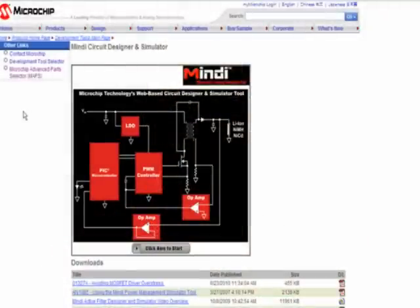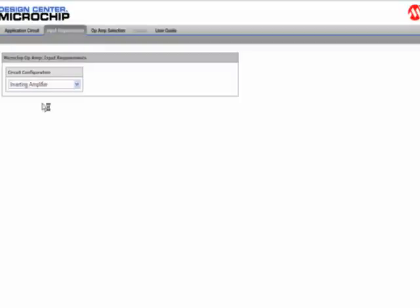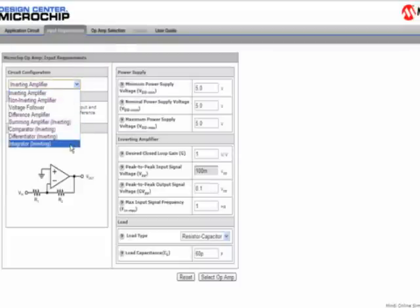We begin by visiting Mindy's home page and starting the circuit designer, followed by selecting Amplifiers. Under Circuit Configuration, select Integrator Inverting.